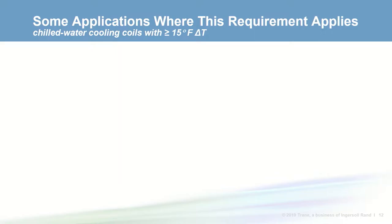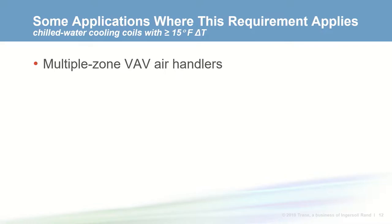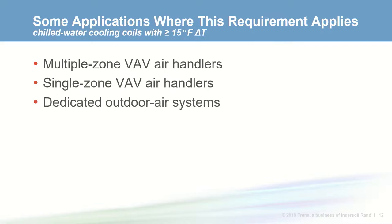So what applications does this requirement apply to? Mixed air multiple zone VAV systems come to mind — they have variable airflow and are usually larger than 5000 CFM. Or a single zone VAV air handler, as might be used in larger zones like auditoriums, gymnasiums, or manufacturing areas. Or a dedicated outdoor air system if it's designed for variable airflow, which would be the case if demand control ventilation is being implemented.